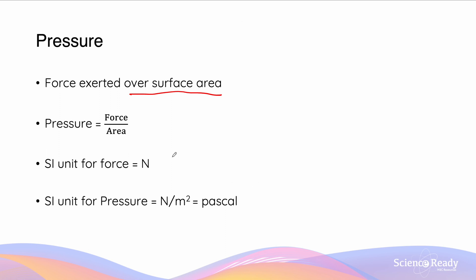Since pressure is force over area, we know that the SI unit for force is N, and the SI unit for area is meters squared. So the SI unit for pressure is going to be newtons per meter squared. It also gives us a new unit which is called the Pascal.